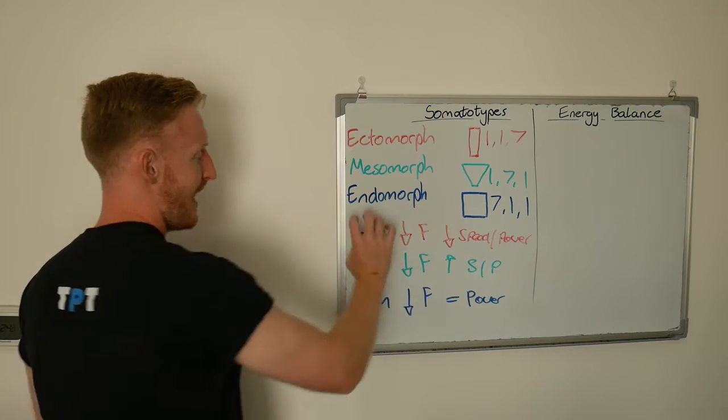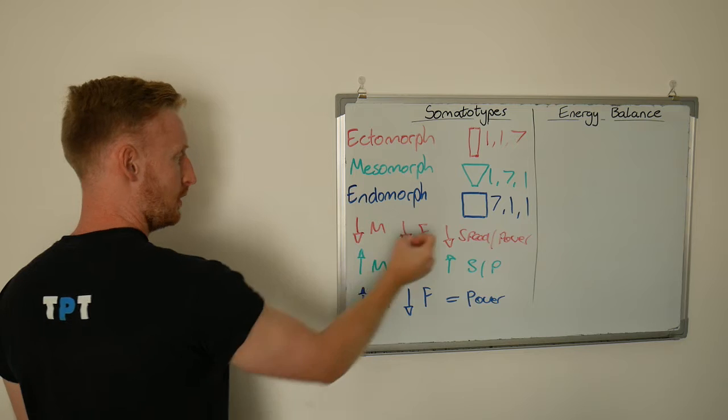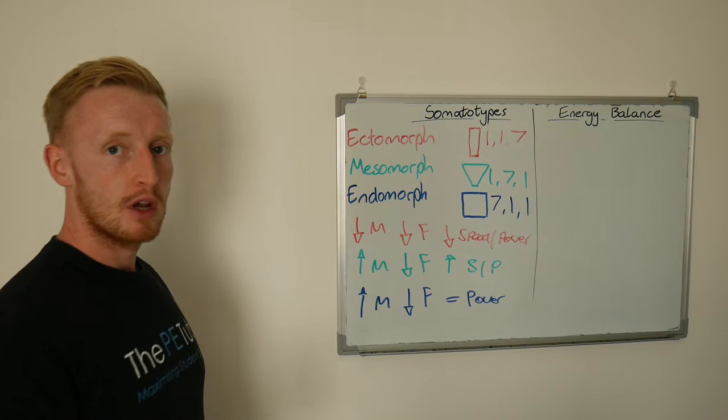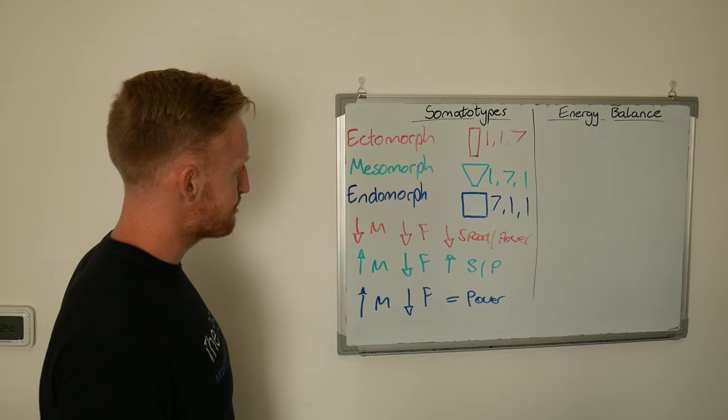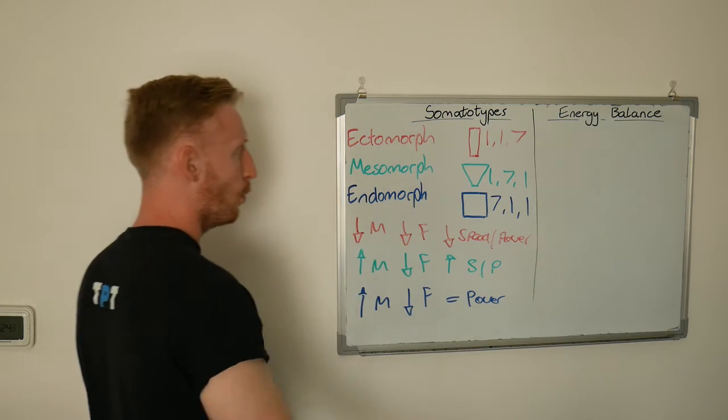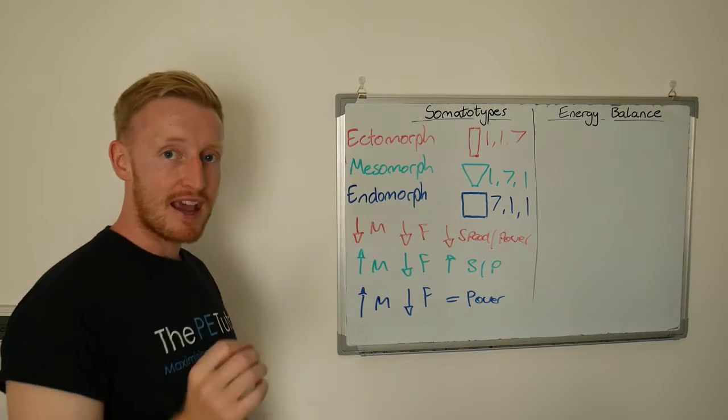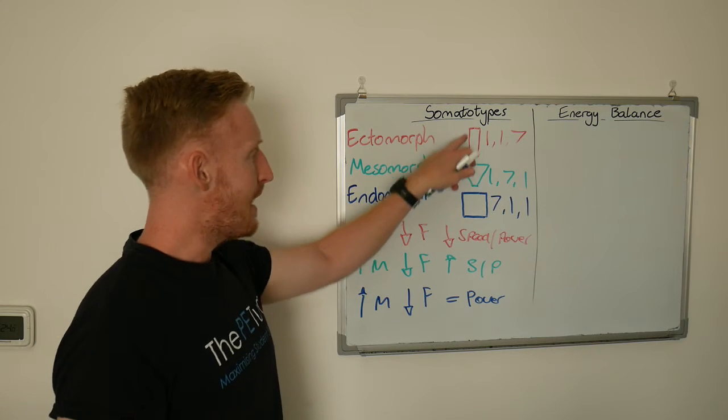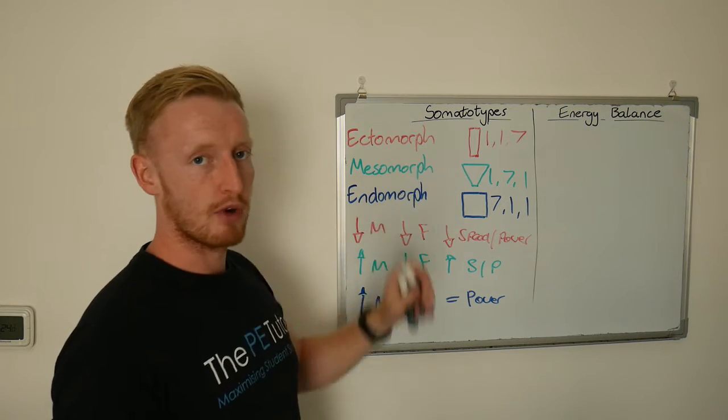So who would suit different sports? Ectomorphs. If we think about low muscle, low power, low fat, good endurance, these are your endurance athletes. Or perhaps positions in sport where height might be advantageous, so perhaps netball or basketball, perhaps marathon running.